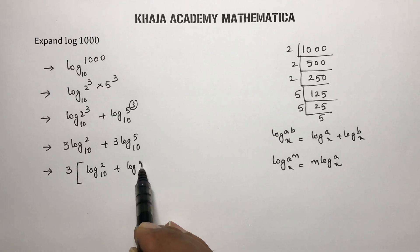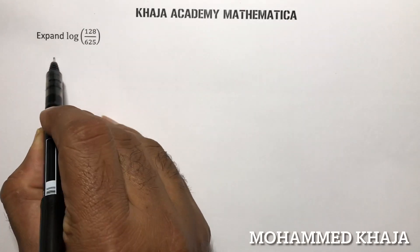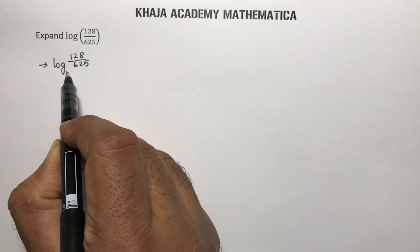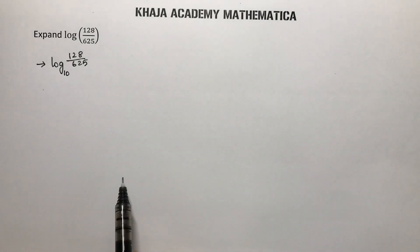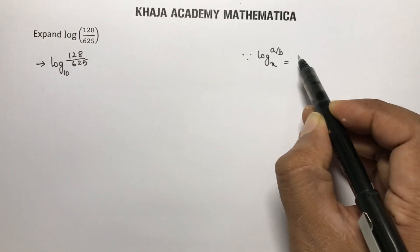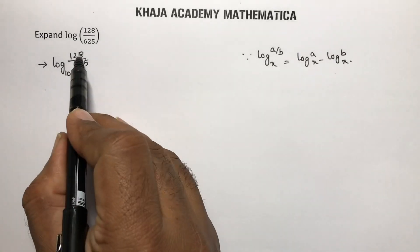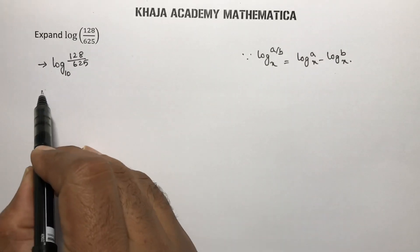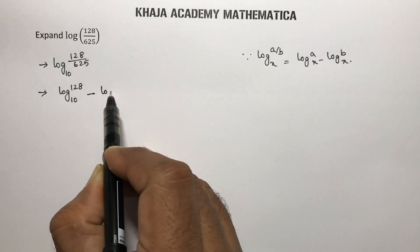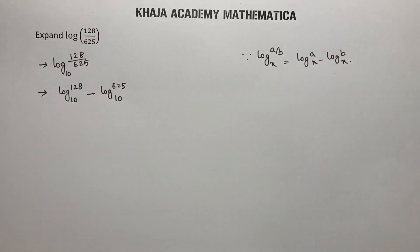Expand log 128/625. You can take the base as 10. This is in the form of log(a/b), and the logarithm of a quotient: log(a/b) to the base x is log a to the base x minus log b to the base x. Here a is 128 and b is 625, so we write log 128 to the base 10 minus log 625 to the base 10.